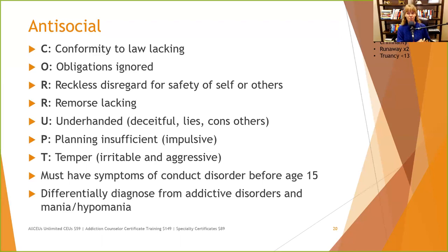You also want to differentiate antisocial from addictive disorders and mania. People in a manic phase can break laws, be very impulsive, ignore obligations, have a reckless disregard for safety, and be irritable and aggressive. Sometimes in a manic episode people still have remorse, but not always. The key differentiator: manic episodes are episodic, while a personality disorder pattern persists for two years or more.